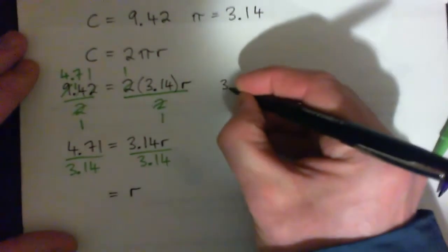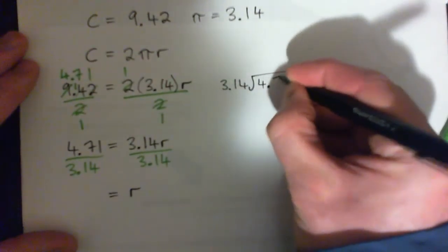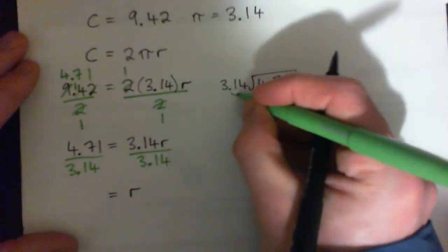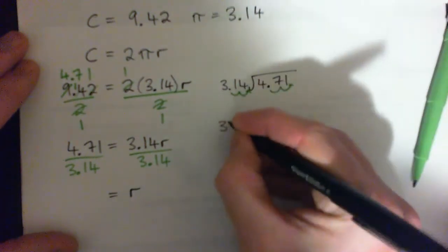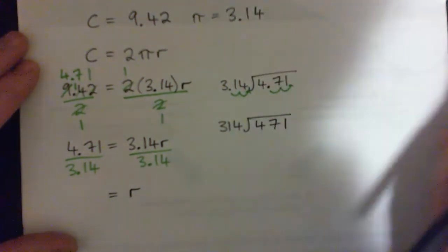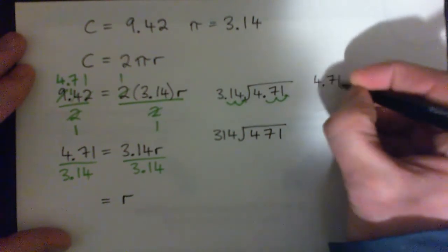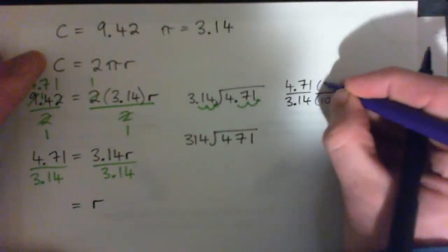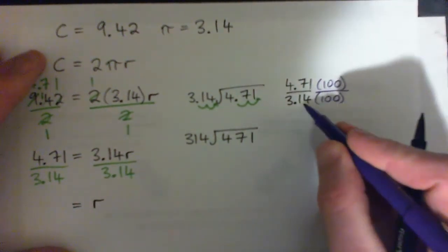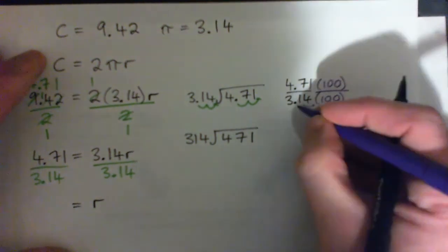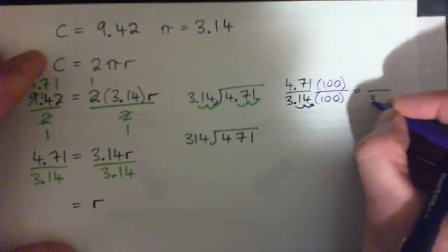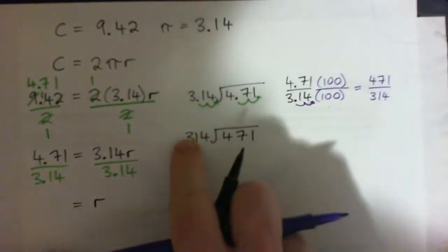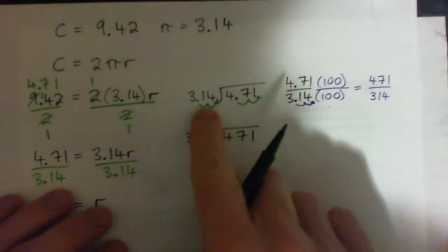So that's a long division with decimals. 3.14 into 4.71. So I'm going to move the decimal point over 1, 2 spots to get 314 into 471. That's the same thing. Why is it the same thing? Because 4.71 over 3.14, if I was to multiply that by 100 over 100, what would I get? Because if I multiply something by 100, the decimal point moves 2 spots to the right. So if I did that, I would get 314 on the bottom, 471 on the top. So multiplying it by 100 over 100 gives us the exact same thing, which is this. 314 into 471. So that's why we can just move them both to the right, and we're dividing by decimals.